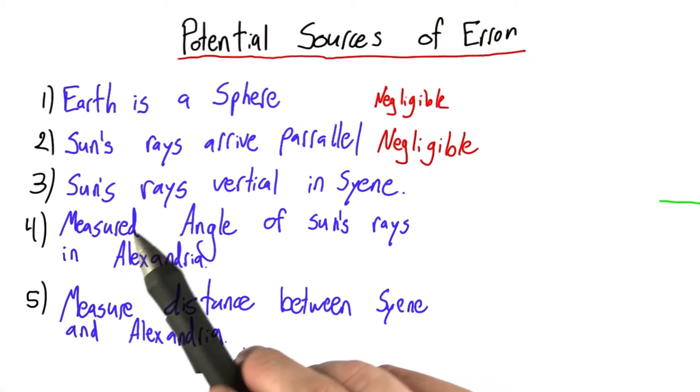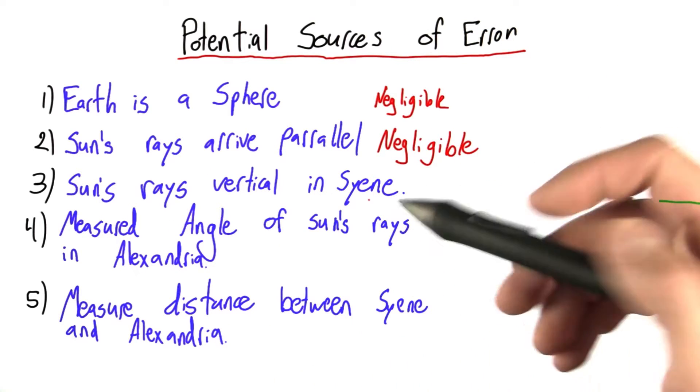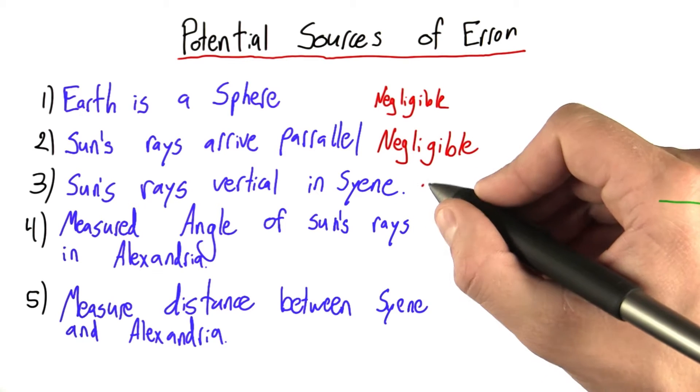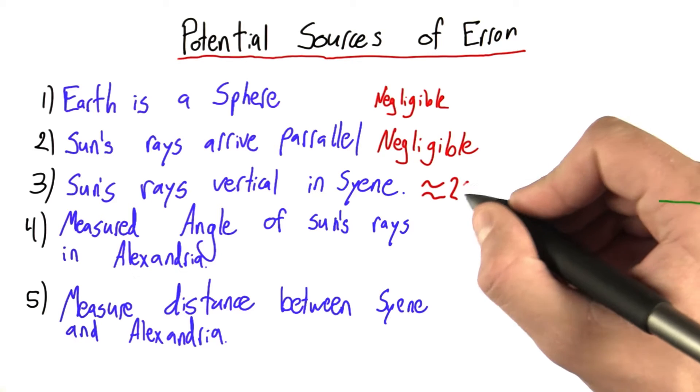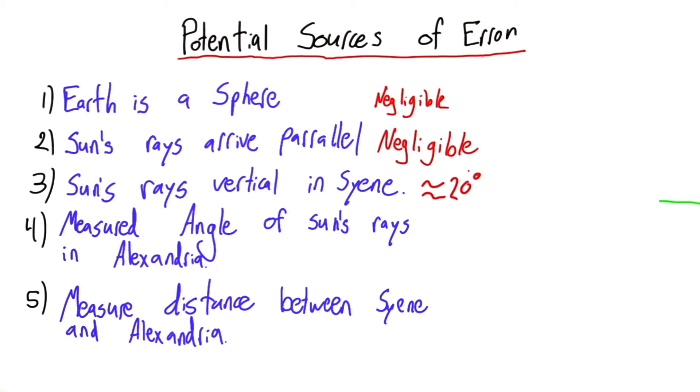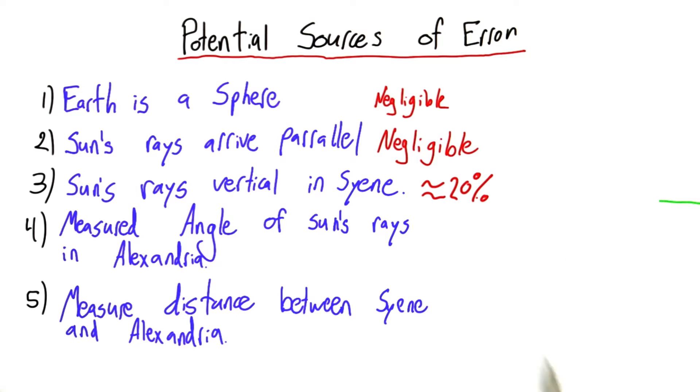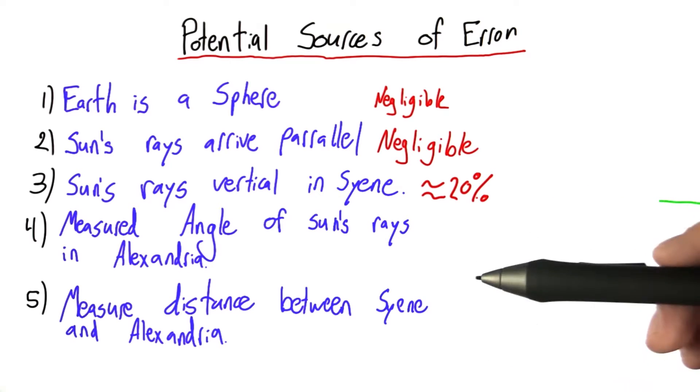Let's go back and we can say that the sun's rays being vertical in Syene, well, that's not entirely true. And the way we made the calculation, that's about a 20% error. We saw it was 16% on one side and 24% on the other. So I'm just going to say it's about 20%. We're just trying to get a big picture idea of where our error is coming from here.